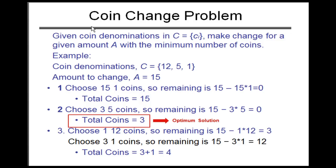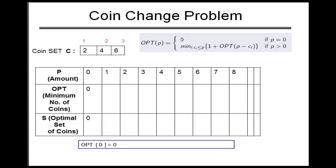Now let's look at the algorithm. When P equals zero, the optimal solution — the minimum number of coins required — is zero. But when P is greater than zero, you use this formula. Let's look at the simulation and you'll understand what the formula means in a bit.